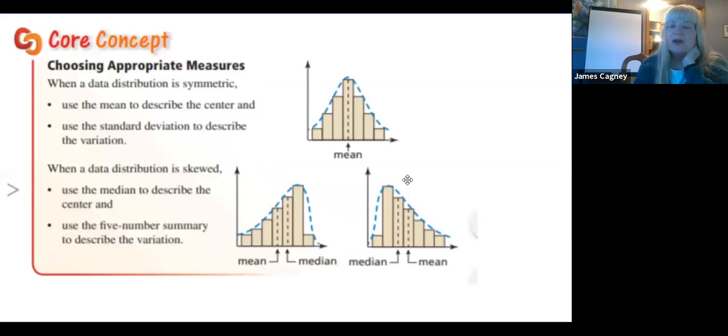The shape of the distribution tells me how I should measure the center of this. When I look at this one, I'm going to use the mean. If I'm talking about a symmetric data distribution on a histogram, or it would be a box and whiskers plot also. So any kind of distribution, if it's symmetric, you are going to use the mean to describe the center or the typical data value. And you're going to use standard deviation, which Ms. Lofts has gone over in another video.